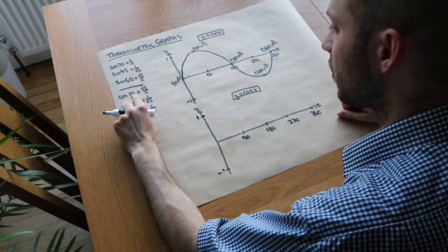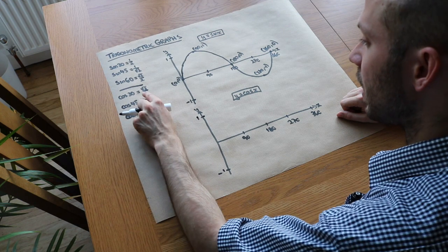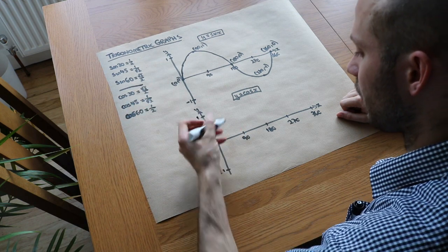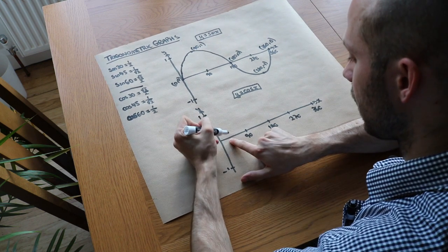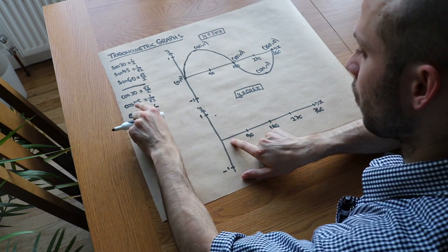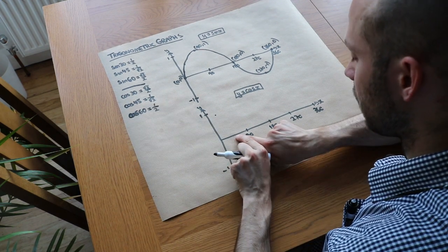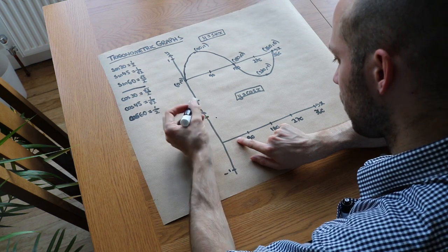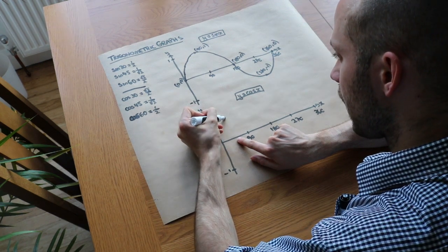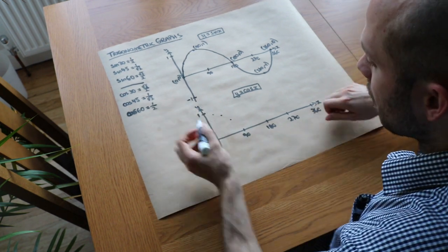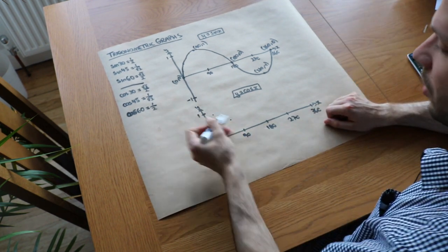So let's just use the values we've got. Cos of 30 is root 3 over 2, that was roughly 0.9, wasn't it? So cos of 30, 30 is roughly here. Cos of 30 gives a y value of 0.9. We've got cos of 45, x value of 45 here. There's 1 over root 2, if you put it on the calculator, it was 0.7-ish, so about here. And then cos of 60 was half, so dropping down to half here.